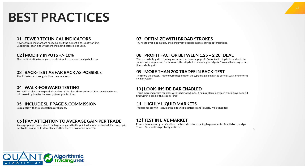Another best practice is to modify your inputs by plus or minus 10%. Once the optimization is complete, I like to modify the inputs by plus or minus 10% to ensure the algo holds up. If it picks a stop of $1,000, I'll check $900 and $1,100 to make sure the profit factor doesn't get destroyed. Whether the stop is $1,000 or $1,100 shouldn't make a huge difference, generally speaking.